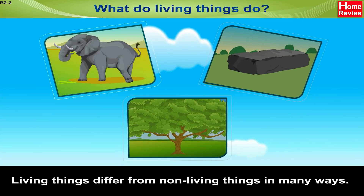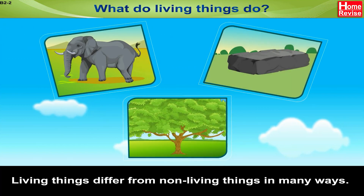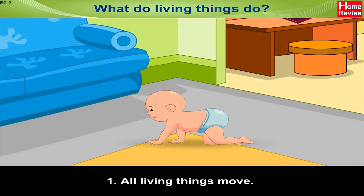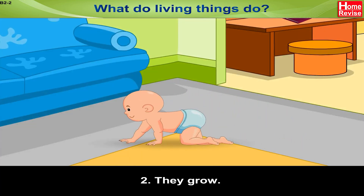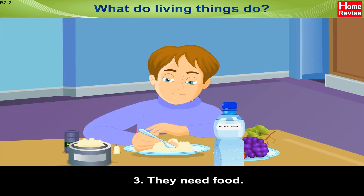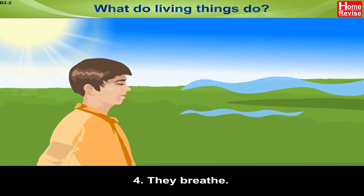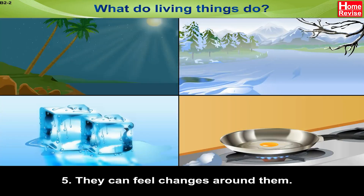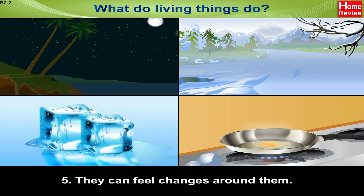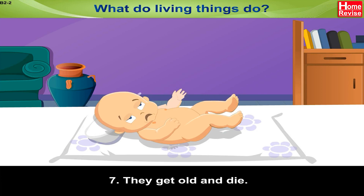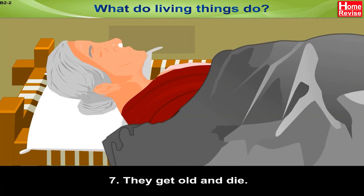Living things differ from non-living things in many ways. All living things move. They grow. They need food. They breathe. They can feel changes around them. They produce young ones. They get old and die.